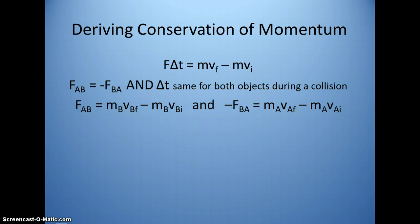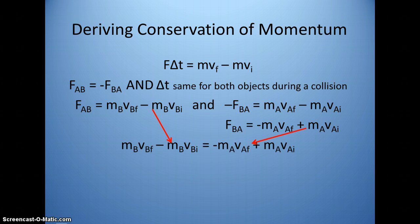Now what we're going to do is multiply it through by negative 1 on the equation on the right, so that we have F_BA = -mv_f + mv_i. So basically what we have here is two equations that are equal, because we're saying that the forces are the same. So what we can do is set these two equations equal here.